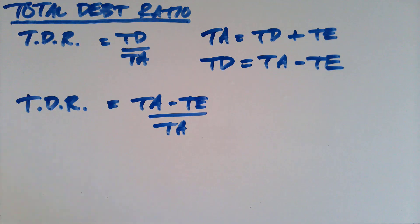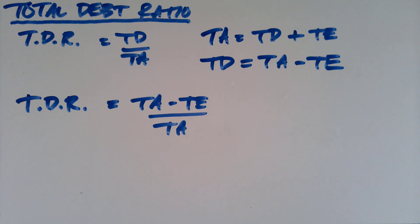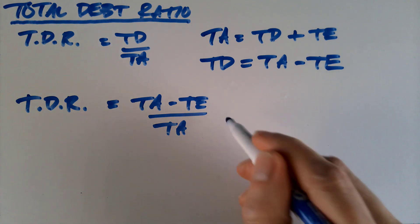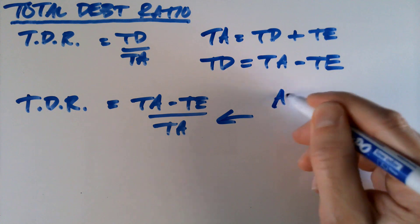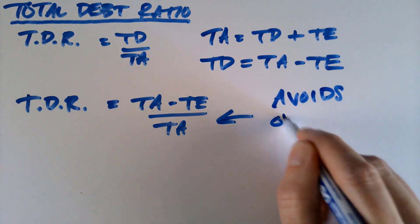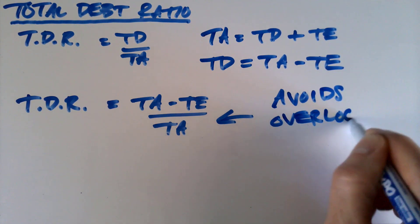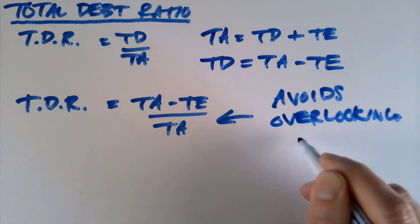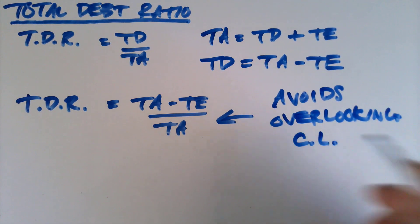Now you might say, why in the world would you do that? The answer is quite simple. When we tell students total debt, they often just put in the long-term debt and miss the current liabilities. The beauty of this substitution is that it avoids overlooking your current liabilities.